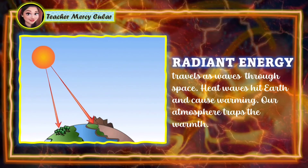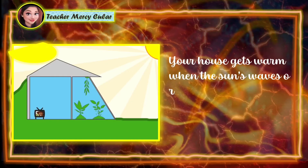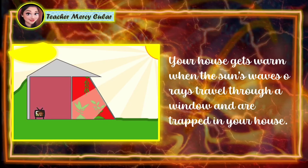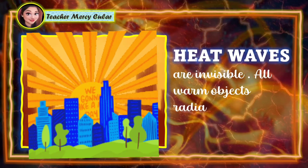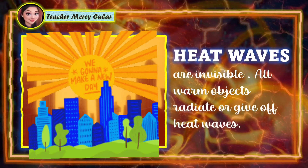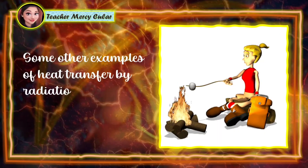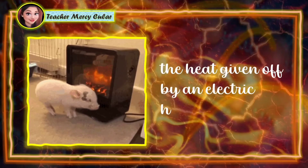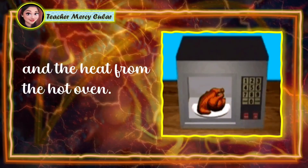Our atmosphere traps the warmth. Your house gets warm when the sun's waves or rays travel through a window and are trapped in your house. Heat waves are invisible. All warm objects radiate or give off heat waves. Some other examples of heat transfer by radiation are: the heat you feel when you are near a fire source, the heat given off by an electric heater, and the heat from a hot oven.